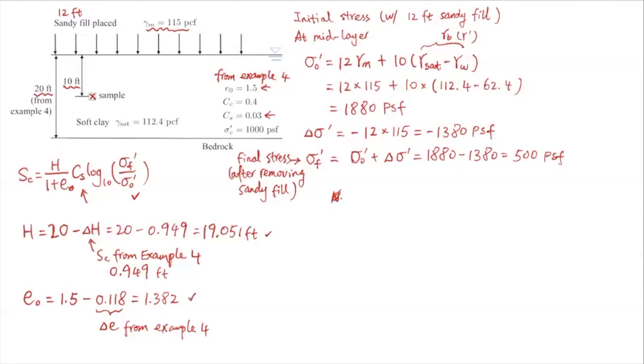...is 19.051 divided by (1 plus 1.382). And then Cs is 0.03, the recompression index, times log₁₀ of σ'f, 500, over σ'₀, 1880.